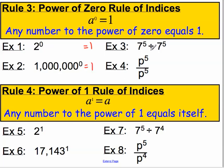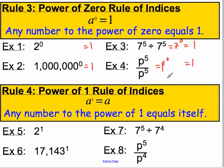7 to the 5 divided by 7 to the 5 equals 7 to the power of 5 subtract 5, which is 7 to the 0, and we know that's equal to 1. P to the 5 divided by P to the 5 must equal P to the 5 minus 5, or P to the 0, and again that's equal to 1.